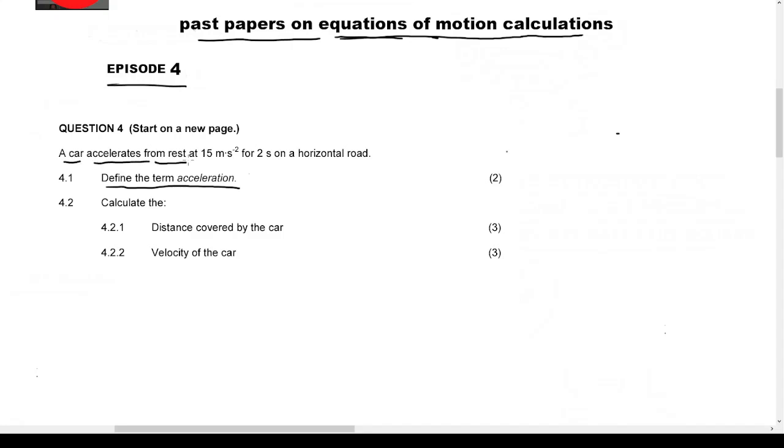The car accelerates from rest, meaning initial velocity is 0 meters per second. It accelerates at 15 meters per second squared for 2 seconds on a horizontal road. So the acceleration is 15 meters per second squared, delta t is 2 seconds, and initial velocity is 0.